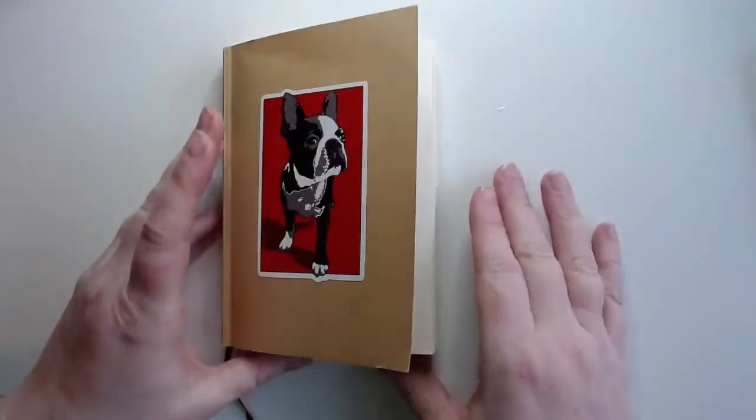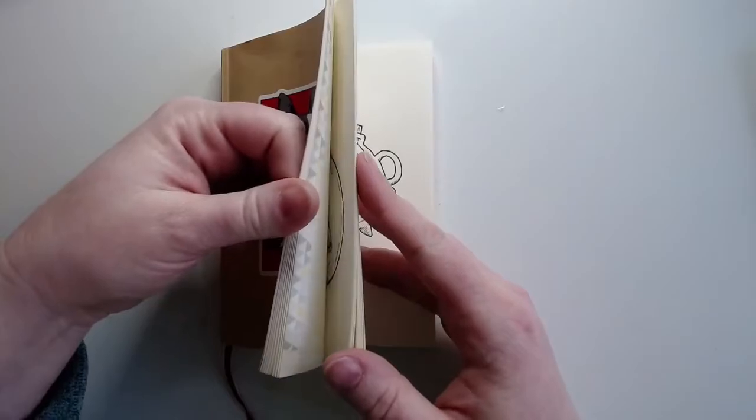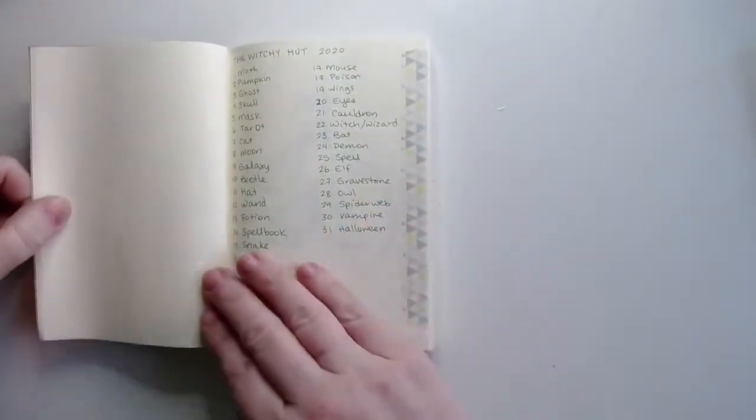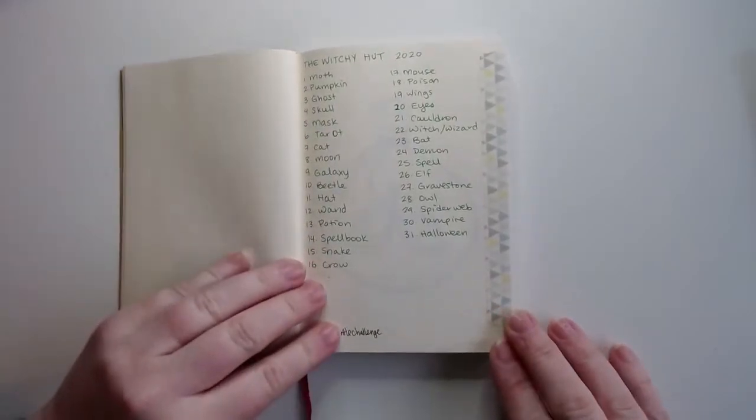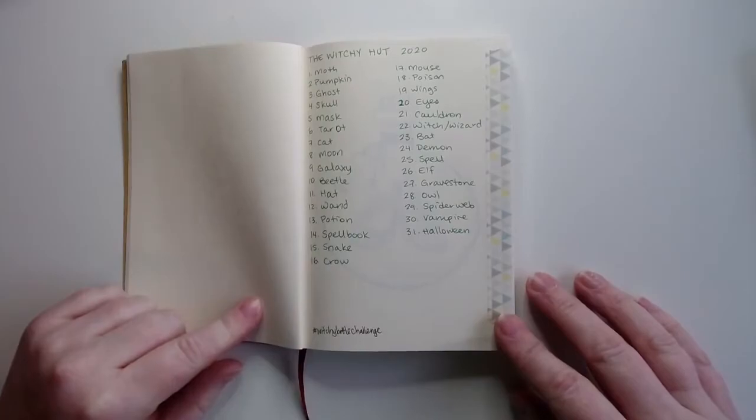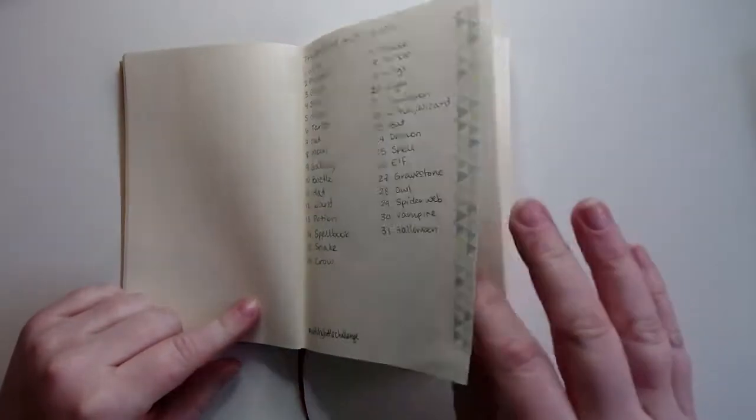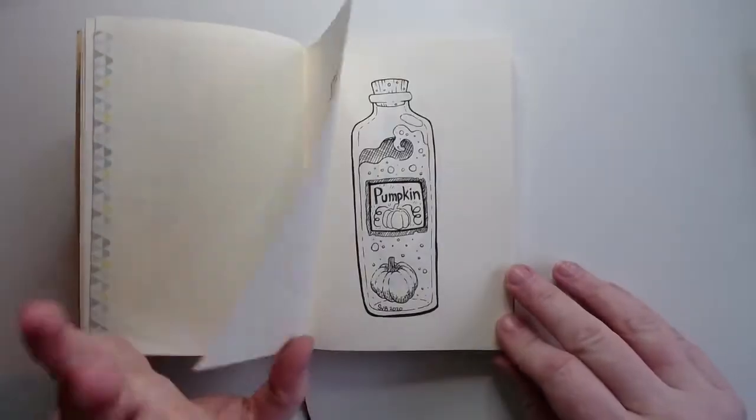And here we are with the final walkthrough of the sketchbook. You can see the prompt list here. You can find it under the hashtag thewitchyhut2020. And if you are looking specifically for my prompts, you can find them on Instagram under the hashtag witchybottlechallenge. A lot of these I'm really proud of.